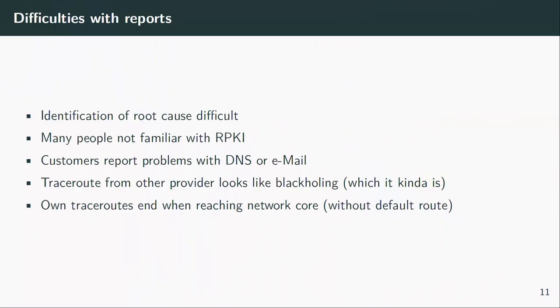Also on traceroutes — believe it or not, we have people outside the network department who can do traceroutes, and some of them can even interpret them the right way. So the traceroute from our office ends after our office firewall, because then it goes through the core router which has no route and drops it — and they say the firewall is broken. There were a lot of false interpretations in the beginning. Our firewalling team was involved a few times, saying we are not filtering anything outgoing. It's really hard for people who don't work with this feature every day to identify that they are hit by the fallout from it.